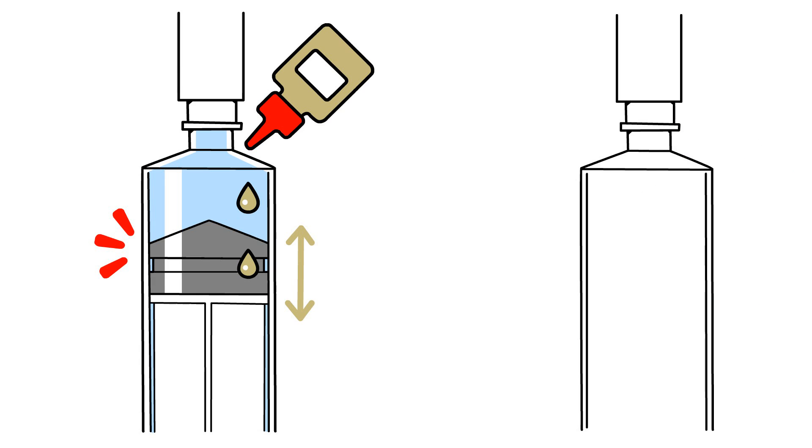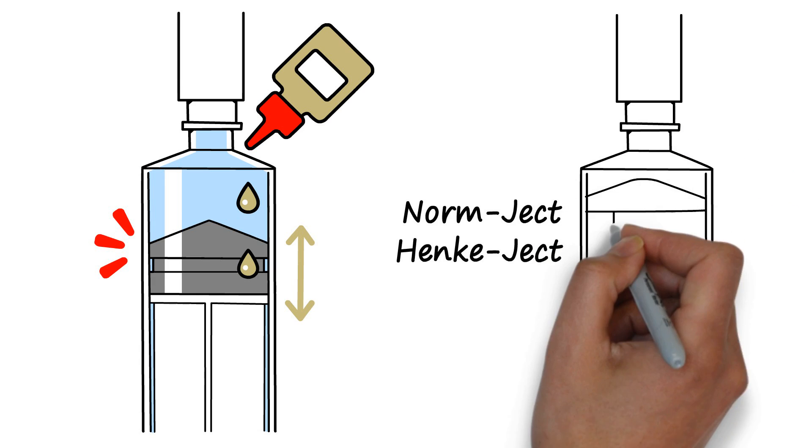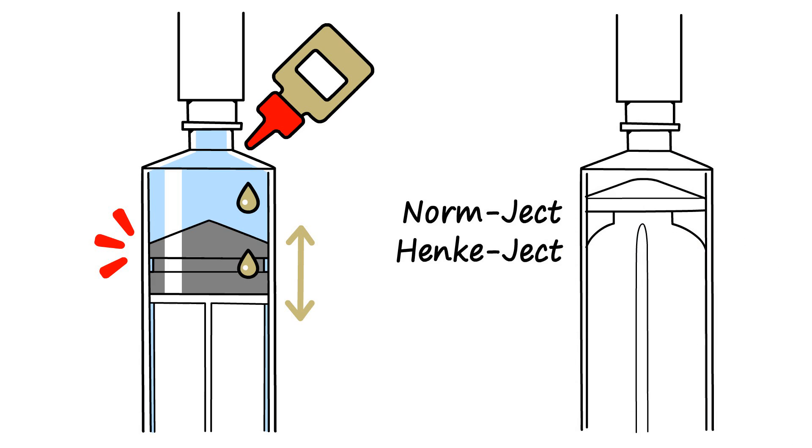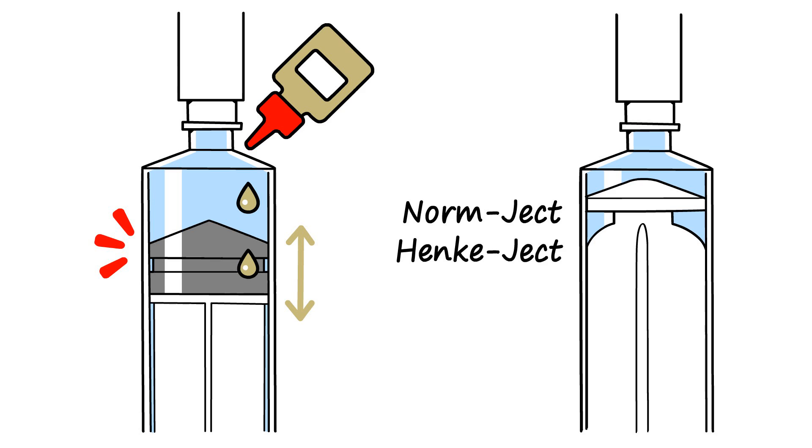Instead, these two-part syringes, known as normject or henkeject, utilize a precisely engineered, slightly oversized plunger head which expands the barrel to create the vacuum.